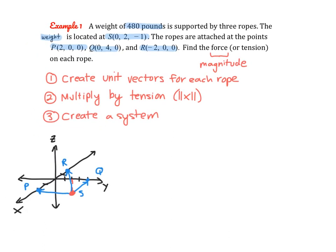We also have the weight vector W going downward. I'll give each vector a general name: vector SP will be called vector V, vector SR will be called vector Z, and vector SQ will be called vector U.